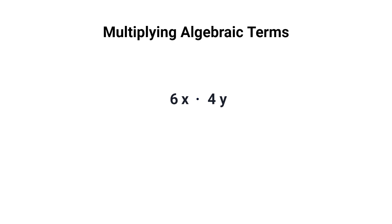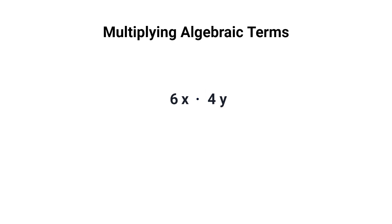But what if instead of adding 6x and 4y we were multiplying them? Unlike with addition and subtraction, when multiplying algebraic terms, terms that are not alike can be brought together. Remember, when a number is next to a variable it means the number is being multiplied by that variable. To multiply, we start by multiplying the numbers and then multiplying the variables.